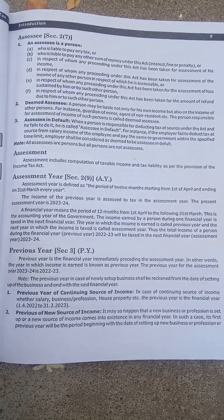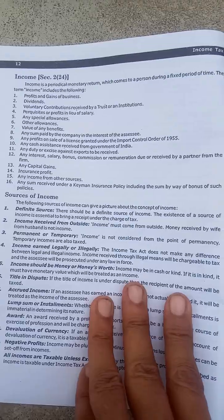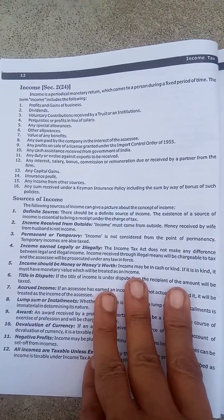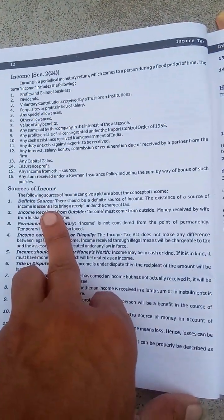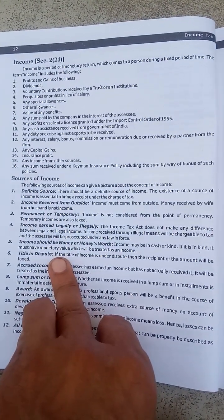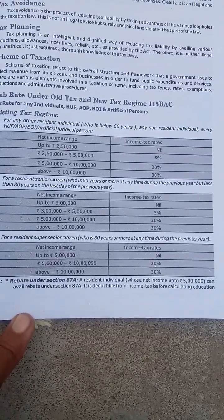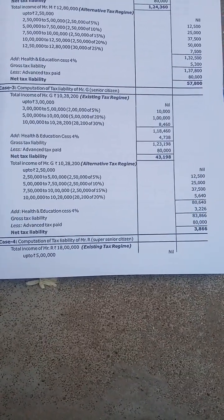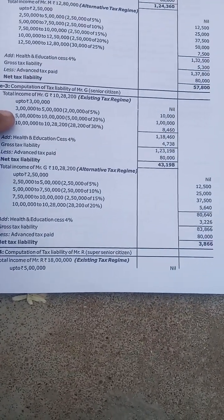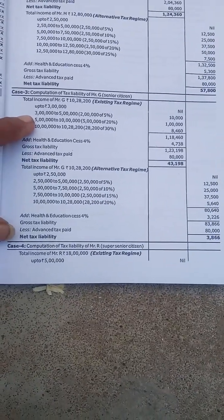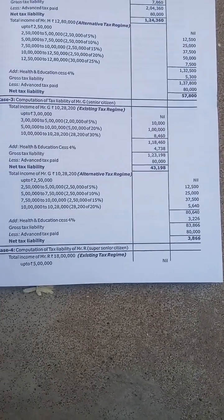Under the Income Tax Act 1961, the Central Board of Direct Taxes manages general income definitions. The monetary return and income definitions are covered, and then we look at the slab rates.